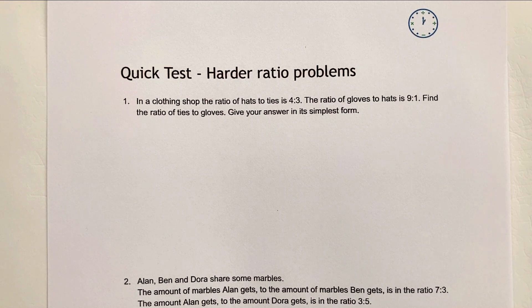Hi, in this particular video, we're going to be looking at slightly more challenging ratio problems. So on with question number one. In a clothing shop, the ratio of hats to ties is 4 to 3. The ratio of gloves to hats is 9 to 1. Find the ratio of ties to gloves.